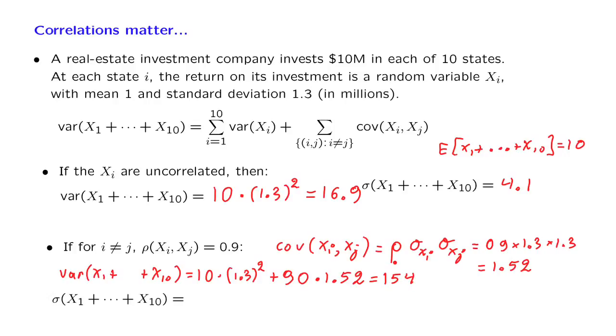Now you take the square root of that, and you find the standard deviation of 12.4. Now, your expected profit is 10, but the standard deviation is 12.4. And if you happen to be one standard deviation below the expectation, which is something that has a sizable probability of occurring, then your profit is going to be negative.